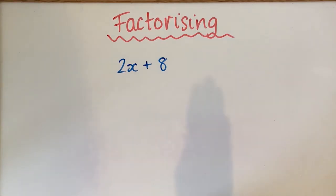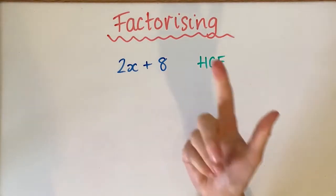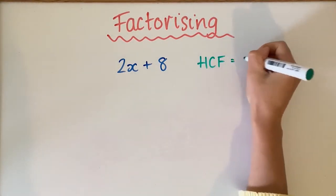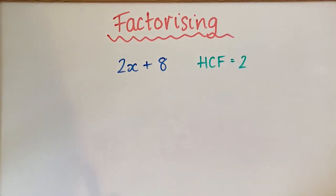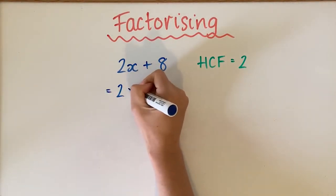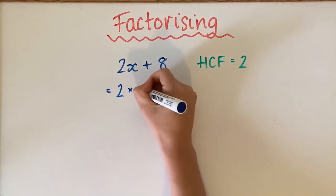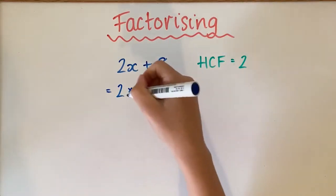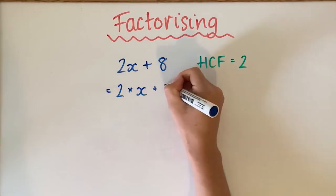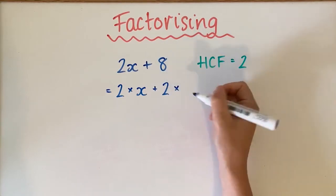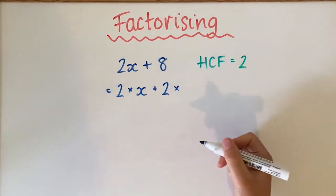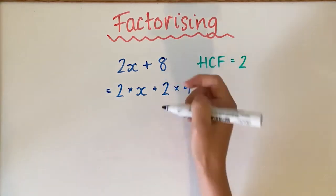This time we have 2x plus 8. The first step is to find the highest common factor. The biggest number that goes into 2 is 2, and it also goes into 8, so 2 is the highest common factor. So we go 2 times x, because 2 times x gives you 2x, then 2 times 4 gives us 8.